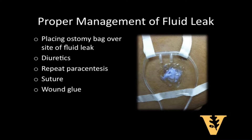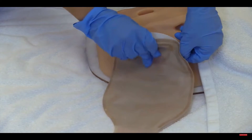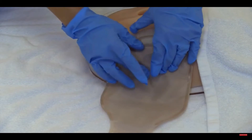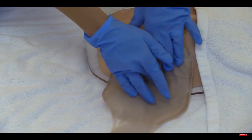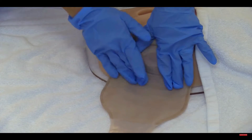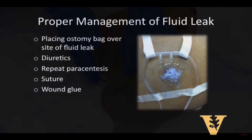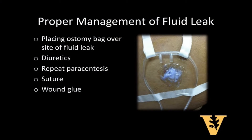When a leak does occur, there are several options at your disposal. Placing an ostomy bag over the leak site is often the preferred option. This allows quantitation of the amount of fluid that is leaking and allows for eventual resolution of the leak naturally and without further trauma to the area. With an ostomy bag in place, the ascitic fluid leak is allowed to heal and stop on its own, and almost always does so without further intervention.